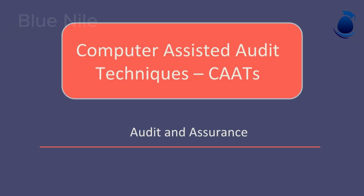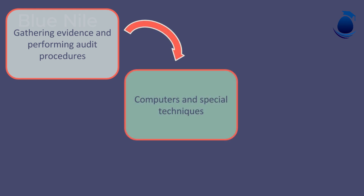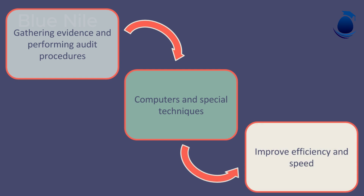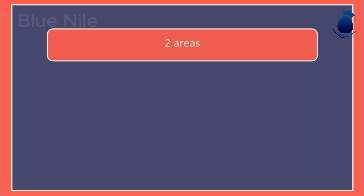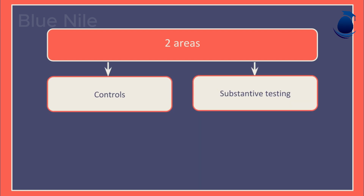This video covers Computer Assisted Audit Techniques, widely known as CATS. When gathering evidence and performing audit procedures, the external auditor can use computers and special techniques. This can improve efficiency and speed up the audit process. The two main areas where CATS can help are the controls work and the substantive testing stage.